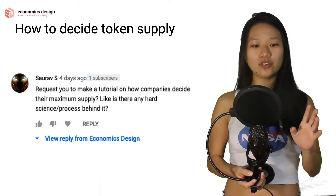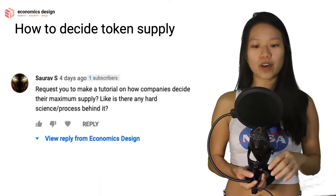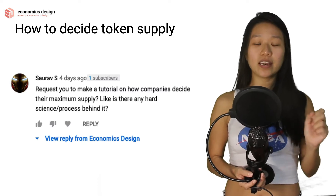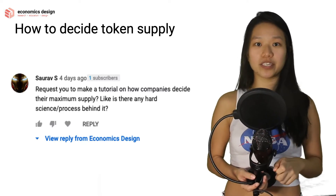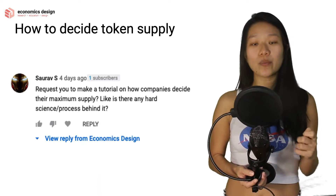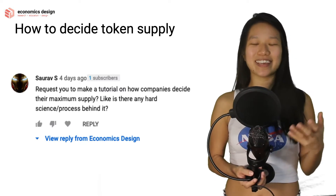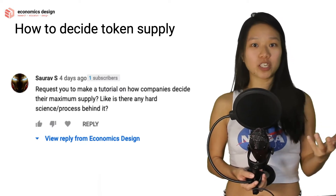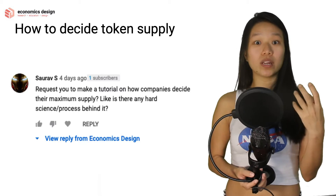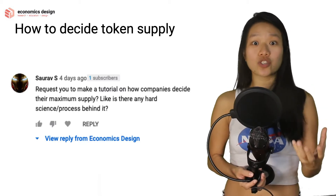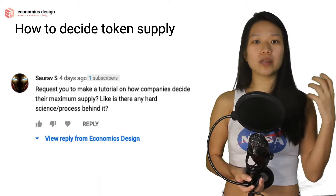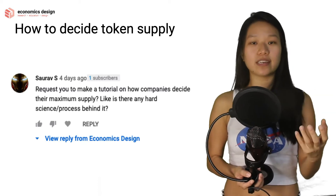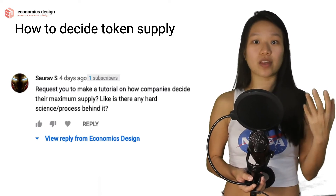Zorav asked: can you show a tutorial of how companies decide their maximum supply? Is there any hard science and process behind it? So I want to answer this with: it depends. It depends on what kind of functions you're looking at, it depends on why you're using token bonding curves, it depends on the entire purpose of your ecosystem, it depends on the incentive mechanisms that you have in place.